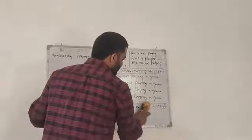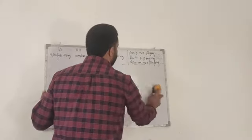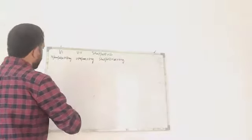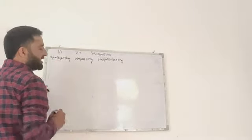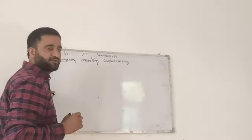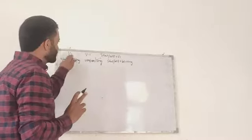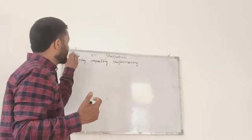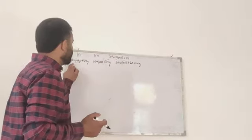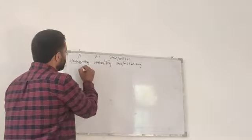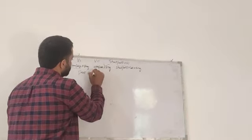Now let us discuss past continuous. To understand it: if it is present continuous, it uses is/am/are. Instead of is/am/are, if you use was/were plus verb in -ing form, then it is past continuous. Verb first form is present indefinite; second form is past indefinite; and is/am/are plus verb in -ing form is present continuous. Instead of is/am/are plus verb in -ing form, was/were plus verb in -ing form is past continuous.